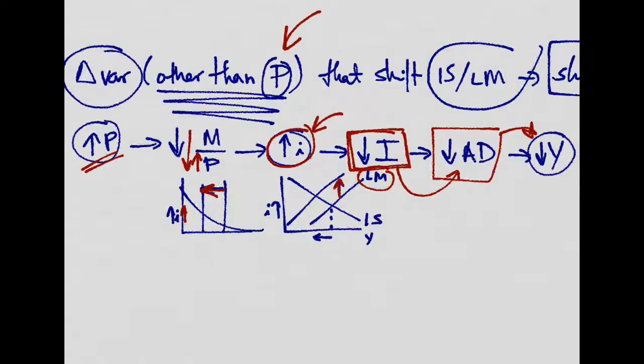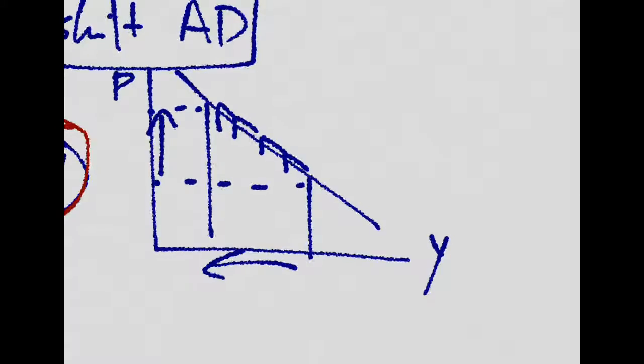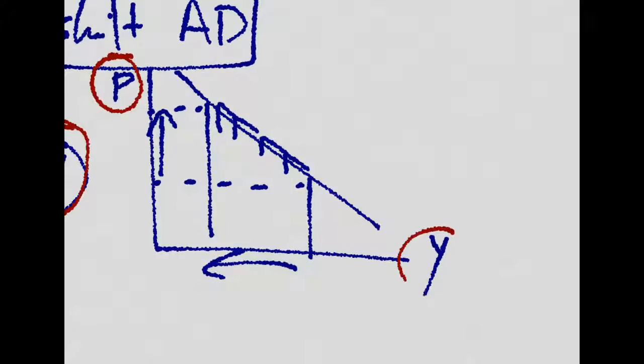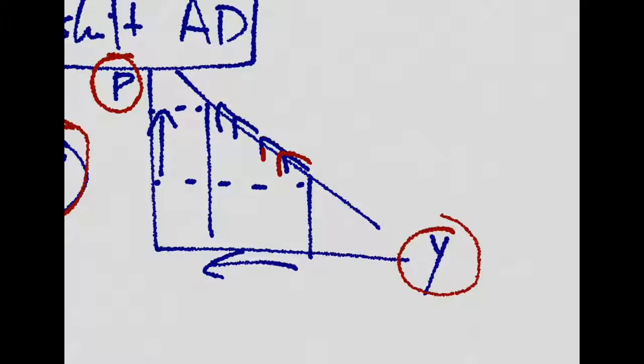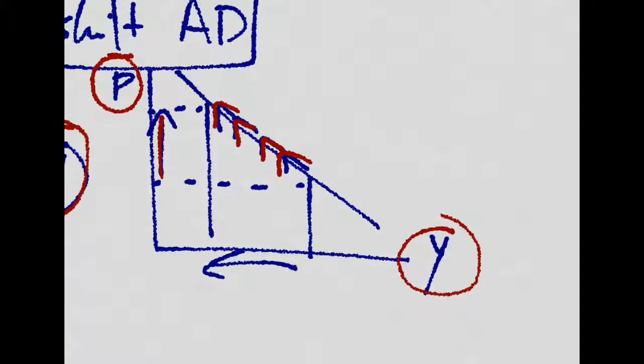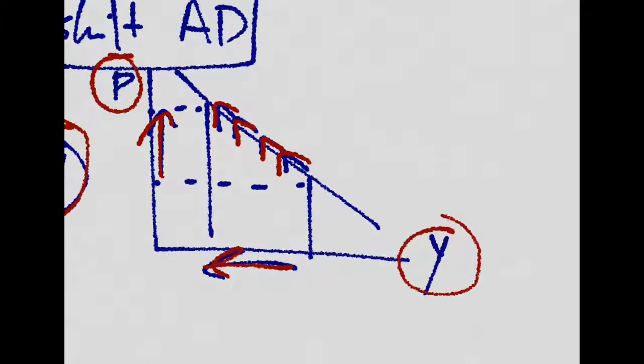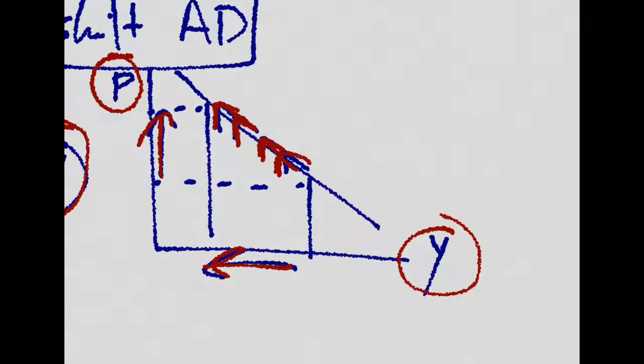So increasing prices will decrease output. But since we plot prices and output in the same graph, that is just the movement along the curve. When prices increase, output decreases, and that's a movement along.